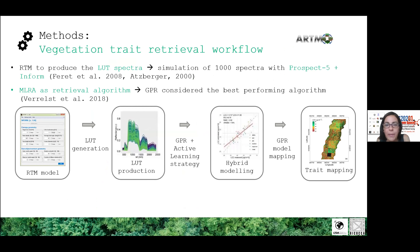In this work, the retrieval of forest traits from APEX images resampled to PRISMA resolution was based on a hybrid retrieval workflow. The hybrid retrieval scheme consists of the use of a coupled model: PROSPECT-5, the leaf-level model, and INFORM, the model at the canopy scale. These models were used for the forward simulation of a set of spectral responses as a function of the model input variables.